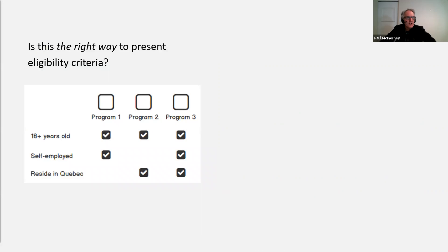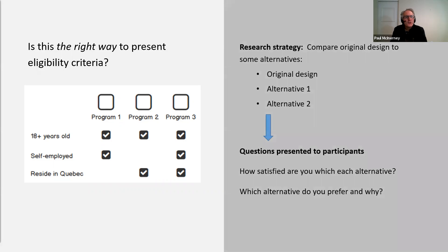Looking at one question individually: 'Is this the right way to present eligibility criteria?' When I hear phrases like 'is this the right way' or 'is this good enough,' I immediately think: compared to what? That transforms the question into comparing the design to some other alternative. The strategy I'd use is to work with the team to come up with at least one alternative, then present both to users with questions about satisfaction or preference. That way we can come back with data saying: yes, this is the right way because it's as good or better than the other ways we tried.